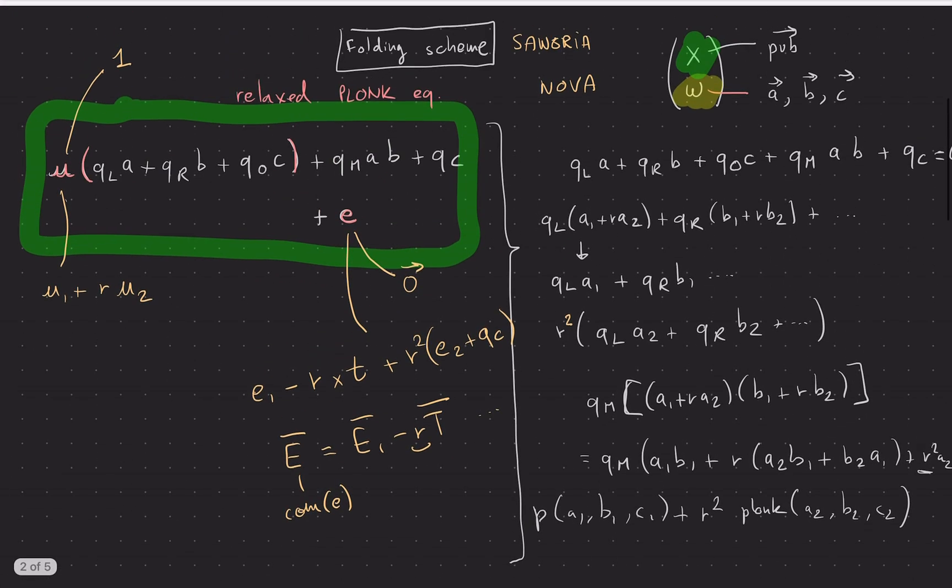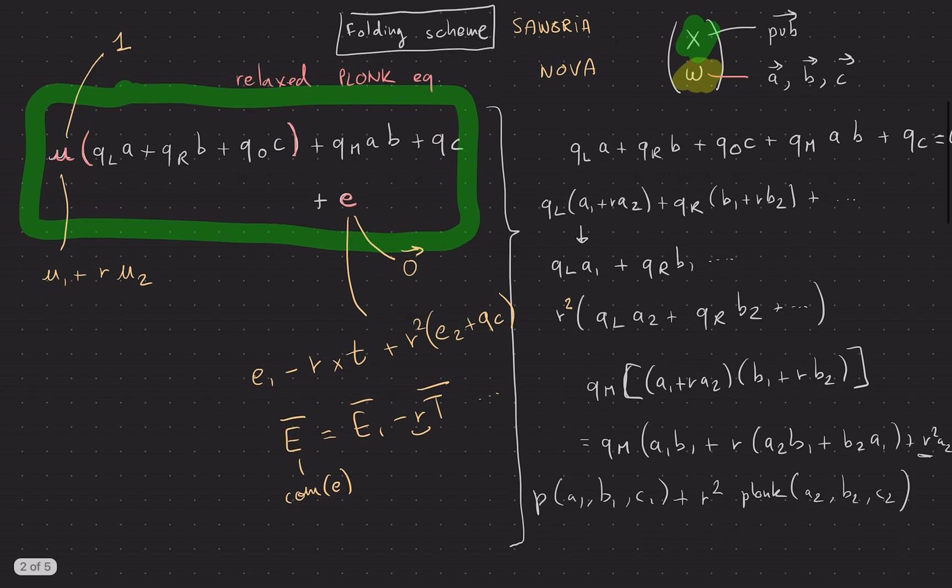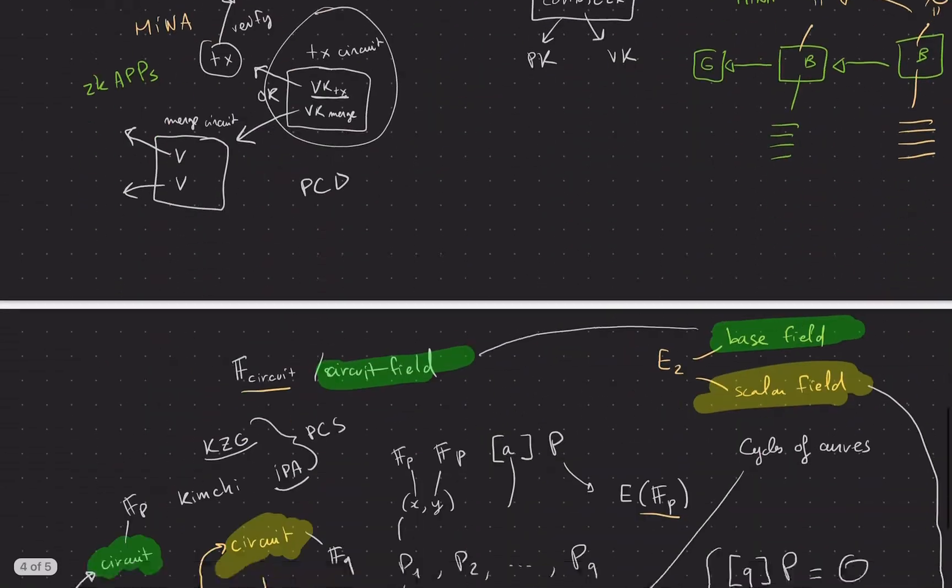But what's interesting as well is that earlier in this series of videos, I've talked about NOVA and Sangria. And so even though NOVA is a proof recursion scheme, they also make use of a cycle of curves. Because you have exactly the same issues in the verifier circuit. You need to implement this folding scheme. And you're acting on commitments of polynomials. And these commitments are in a different field because they're elliptic curve points. And so you end up cycling between these two curves as well.